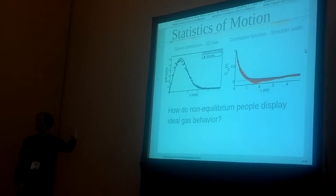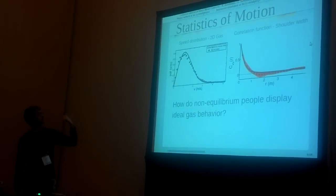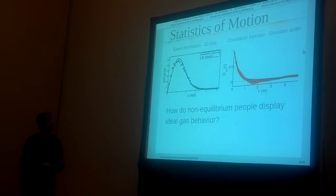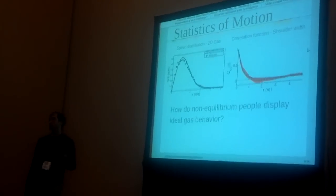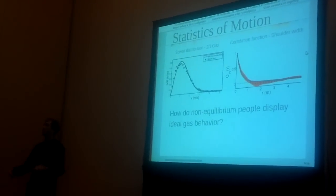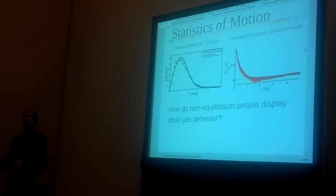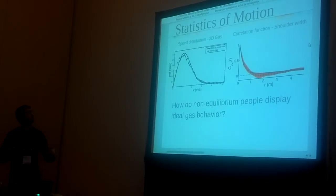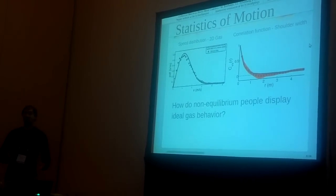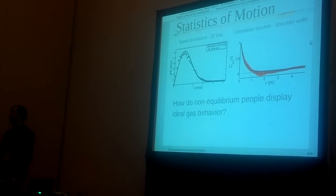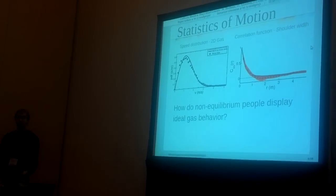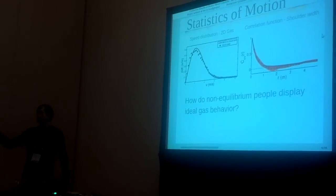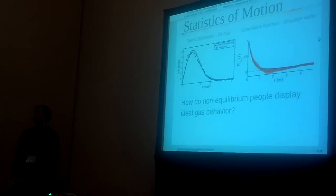You can see that the data in the black dots is well fit by the solid curve, which reflects a potential that drives around a shoulder width. So what we see here is very uncorrelated motion, and it's very much like an ideal gas. So how do these non-equilibrium, presumably intelligent agents, display ideal gas behavior?